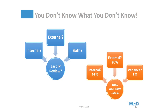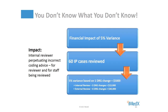Which brings me back to the title of our presentation: you don't know what you don't know. Let's take a moment to think about the last time you performed a coding quality review of your coder's inpatient coding. Was it internal, external, or both? If both, how did the accuracy rates compare? So what is an acceptable variance to you — 5%, 10%, maybe 2%? Let's put some dollars to a 5% variance. If both internal and external reviewers looked at the same 60 inpatient cases and there was a 5% variation in DRG changes, with an average variance of one DRG change at $5,000, we are looking at a $15,000 difference in findings. But the greater damage beyond the $15,000 in reimbursement is the perpetuation of incorrect coding advice, both for the internal reviewer and for the staff being reviewed.